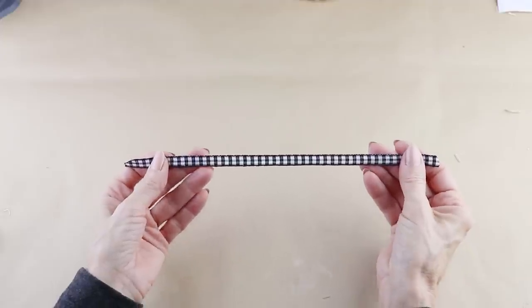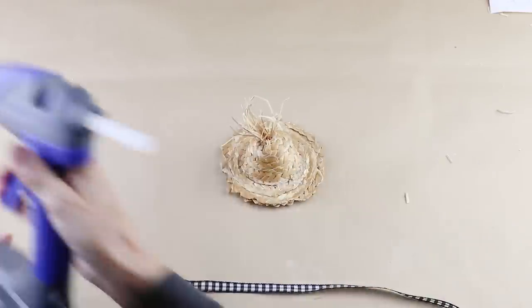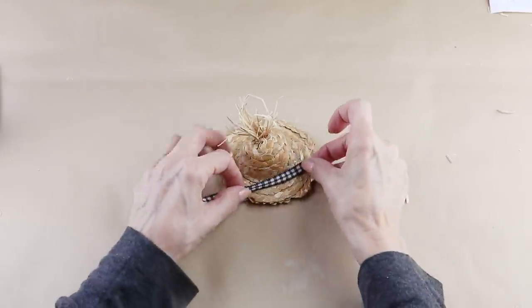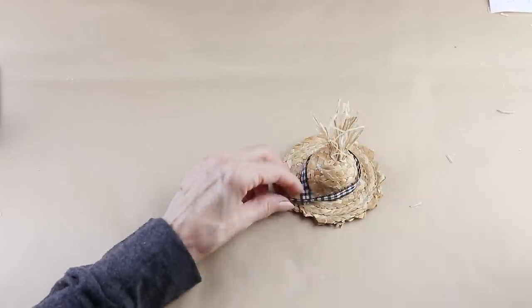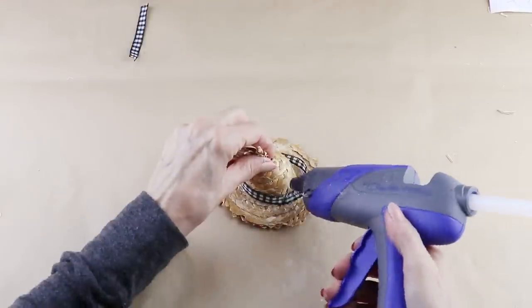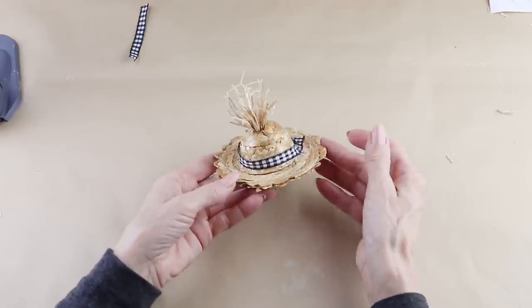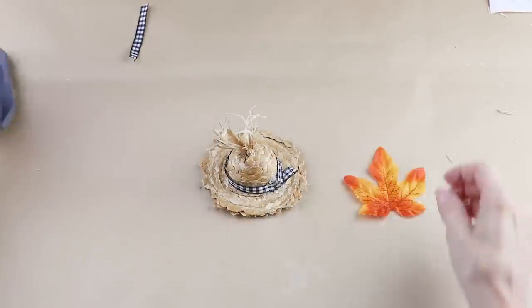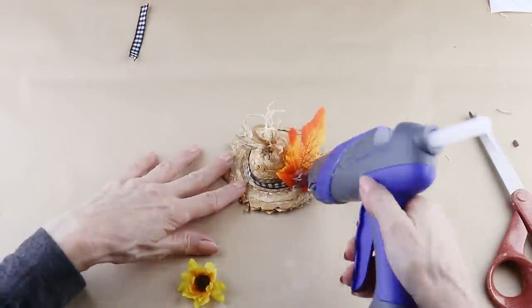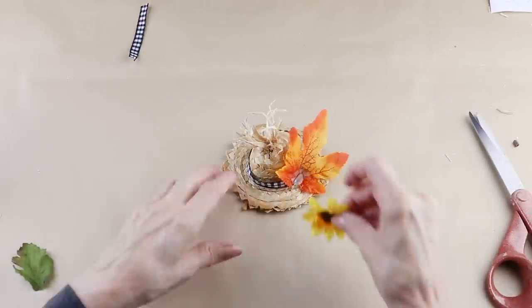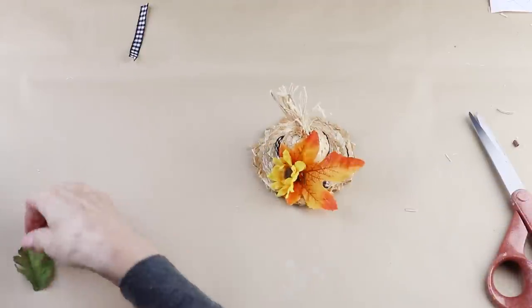I hot glued some raffia inside the hole and then trimmed off the top. To embellish the hat, I'm using a leftover piece of quarter inch buffalo check ribbon. I attached the end to the hat, measured the size, trimmed it off, and then attached the other end. To accent the hat, I'm adding one of the fall leaves from the Dollar Tree and one of their small sunflowers. I'm then adding a hint of green by attaching a simple leaf to the back.